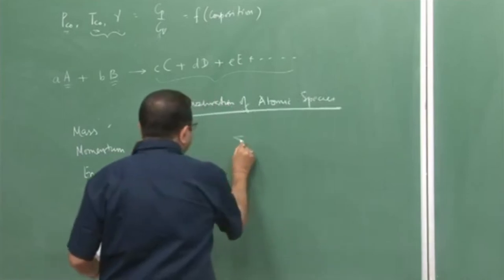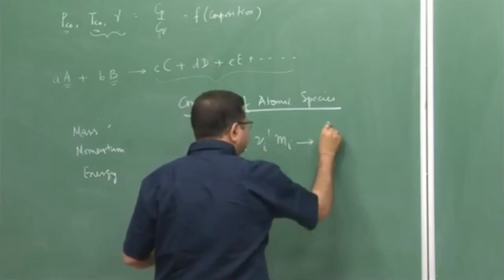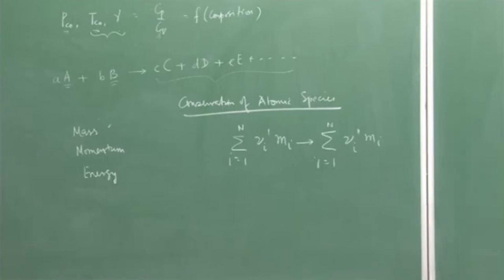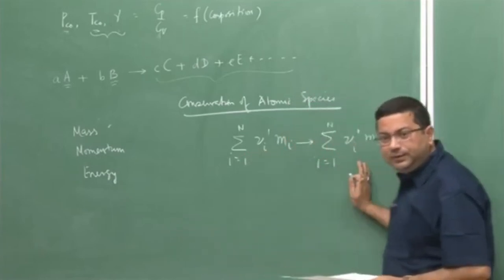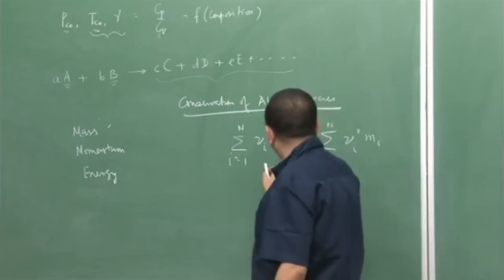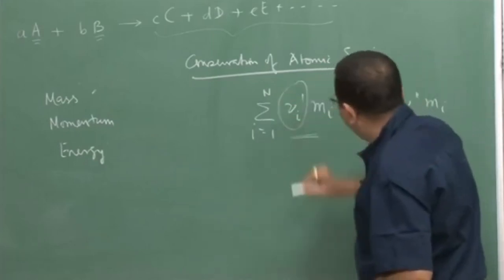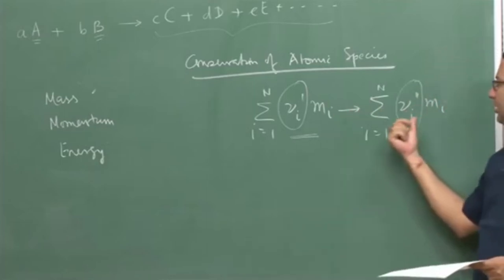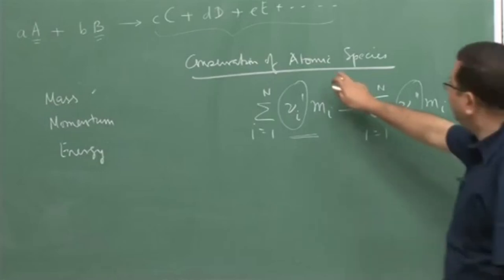If I consider a generalized chemical reaction — actually a series of n reactions in total — the left-hand side represents the reactants and the right-hand side represents the products. According to conservation of atomic species, once the reactant side is specified and the number of moles of reactants (mu-i-prime) are specified, the values of mu-i-double-prime, that is the composition of the product side, is also constrained. This constraint is due to the conservation of atomic species.